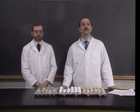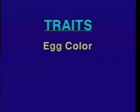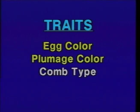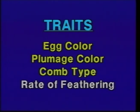We're going to be dealing with primarily four traits today. The first trait is egg color, and we'll discuss its inheritance pattern. The second is plumage color, which involves incomplete dominance and provides a very good example for that. The third trait is a type of comb, and we'll show three examples. And the final trait deals with rate of feathering and how it relates to sexing of chickens.